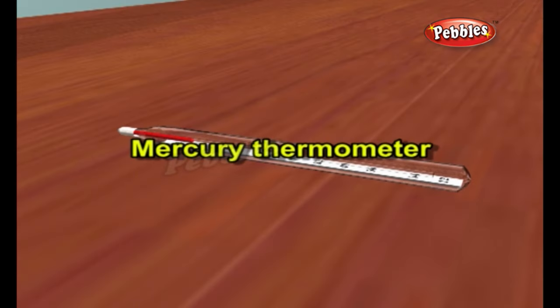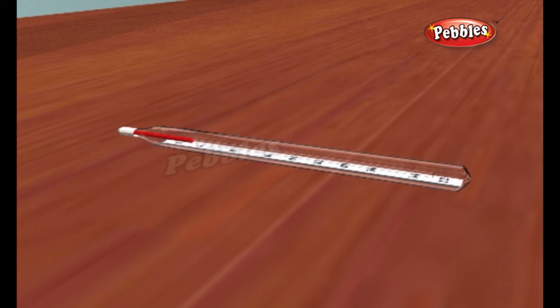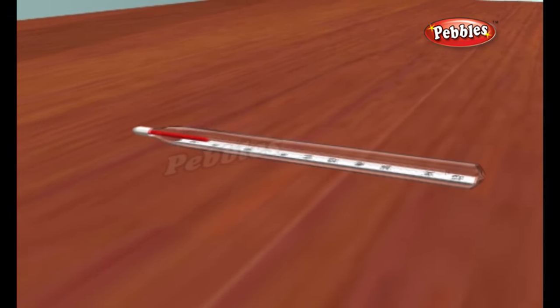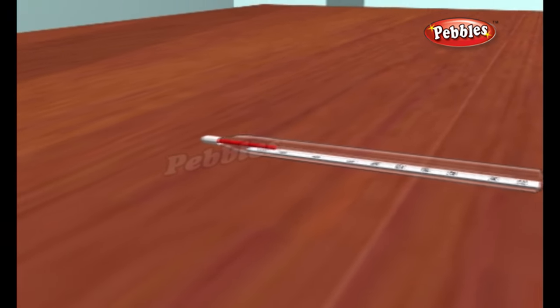The simplest thermometers really are simple. They are just very thin glass tubes filled with a small amount of mercury, a rather special metal that's a liquid at ordinary everyday temperatures.